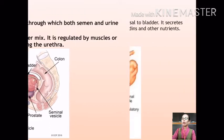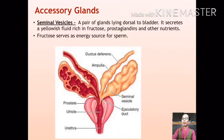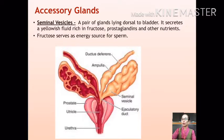About 70 to 85 percent of semen originates from the seminal vesicles, which are a pair of coiled tubular glands that lie behind the urinary bladder. They secrete a yellowish fluid rich in fructose, prostaglandins, and other nutrients. Fructose serves as an energy source for semen.